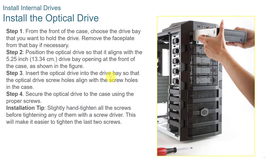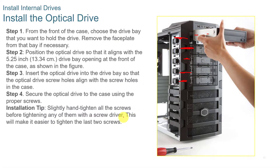This older-style case shows multiple drive bays — the 5.25-inch bays are here. To install, remove the front of the case — how that's done depends on the case manufacturer, so check the internet or manufacturer documentation. Then position the drive, slide it in, put the screws in, and tighten them. Don't over-tighten the screws — get them all in first, then go back and tighten evenly, being careful not to strip any screws.